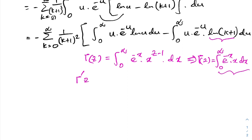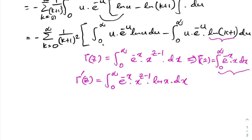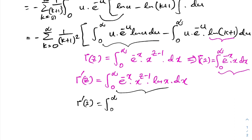The derivative of gamma is: gamma dash of c equals the integral from 0 to infinity of e to the minus x times x to the c minus 1 times natural log of x, dx. Plugging in c equals 2, we get gamma dash of 2 equals the integral from 0 to infinity of e to the minus x times x times natural log of x, dx. This matches our integral with u instead of x.